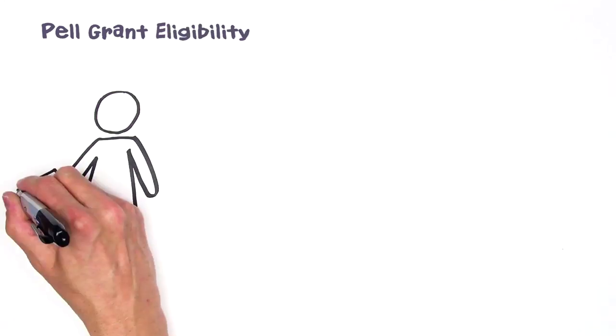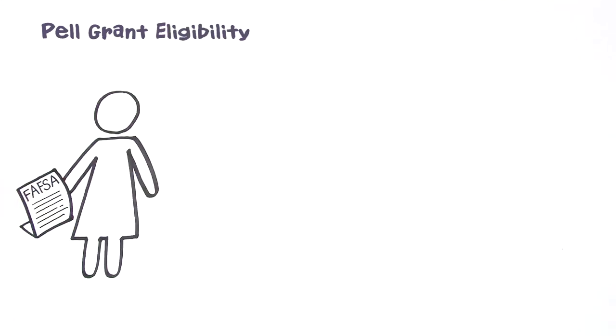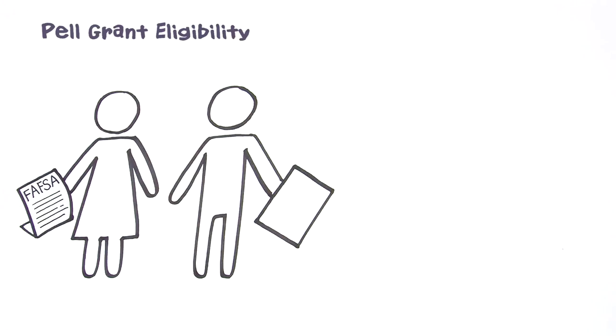How does the federal government determine Pell Grant eligibility? After each student completes a Free Application for Federal Student Aid, the student learns what his or her expected family contribution is.